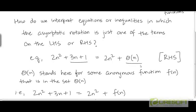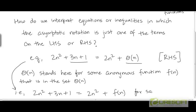When the asymptotic notation appears as one of the terms on the right-hand side, the notation stands for some anonymous function in that set — some anonymous function which we are not caring to specify in all its details with the constants. We are just specifying that it is some function in this set. So 2n-squared plus 3n plus 1 is 2n-squared plus some anonymous function f(n). In this case f(n) is of course 3n plus 1, but we are just hiding the exact form. We can rewrite this as: 2n-squared plus 3n plus 1 equals 2n-squared plus f(n), for some f(n) in the set theta of n.